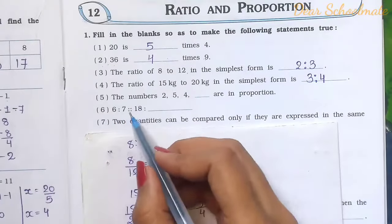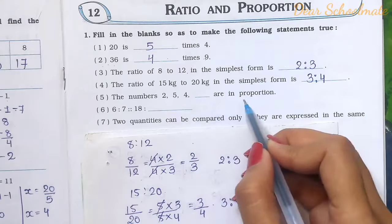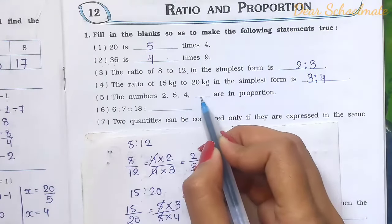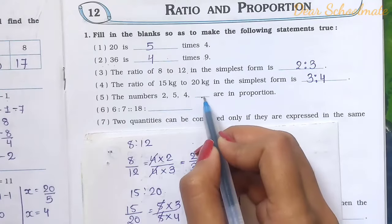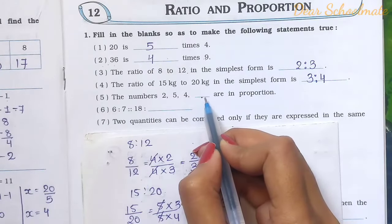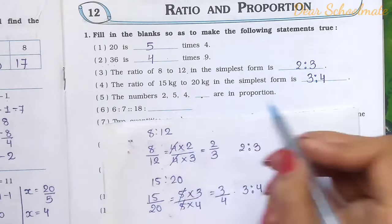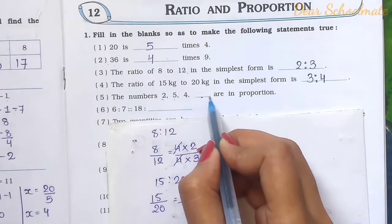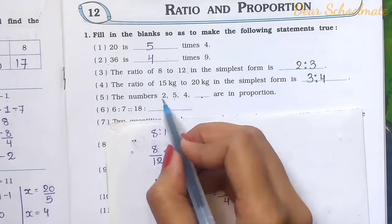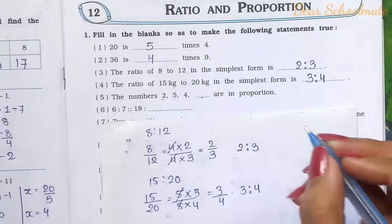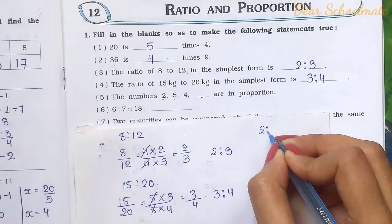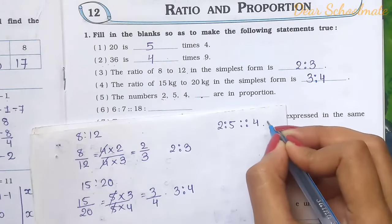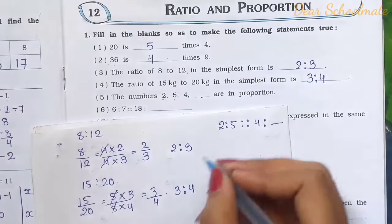Number 5: The numbers 2, 5, 4, dash are in proportion. We have three numbers and need to find the fourth. The ratio is 2 is to 5. We need 4 is to dash in proportion. Since 2 multiplied by 2 gives 4, we also multiply 5 by 2, giving 10. So the missing number is 10, and the proportion is 2, 5, 4, 10.